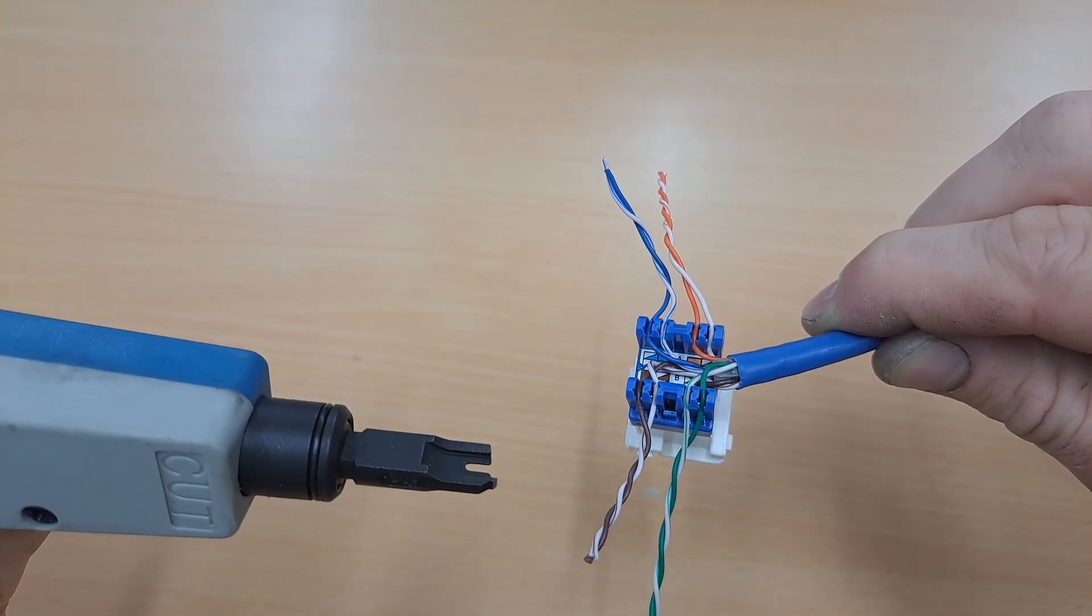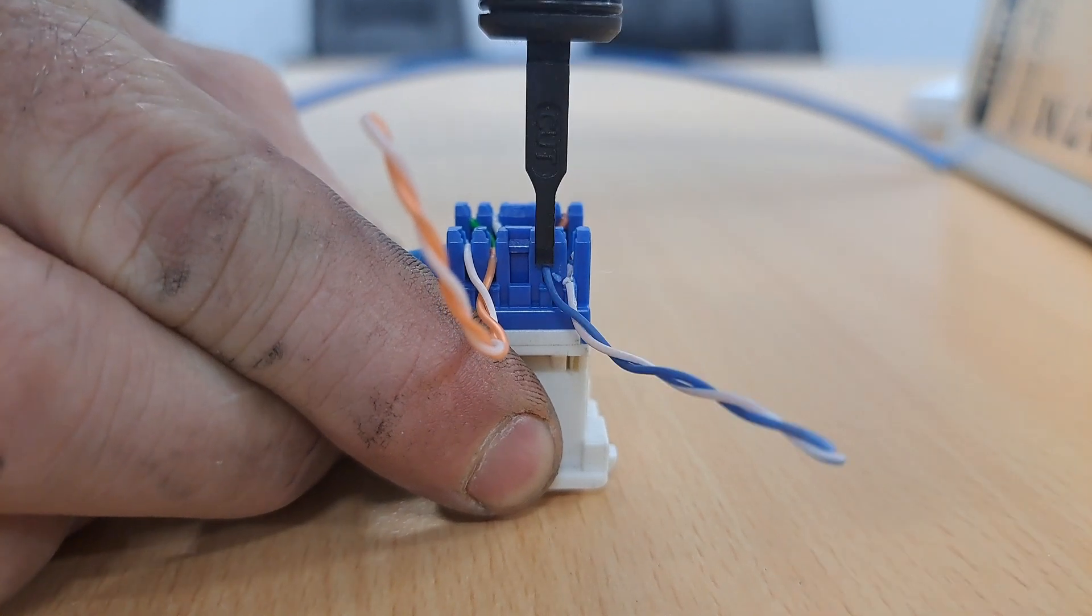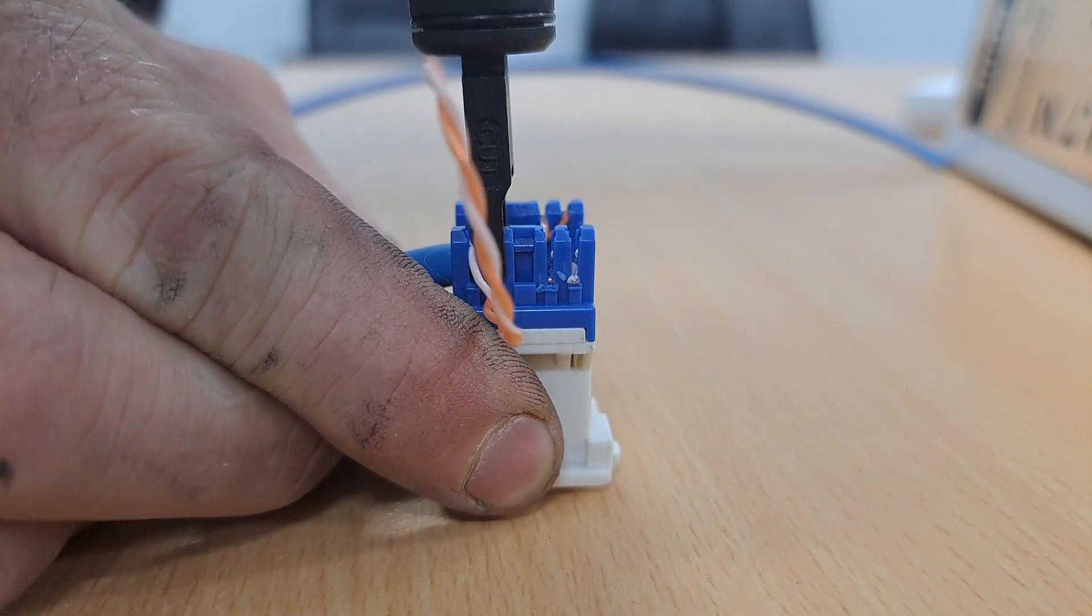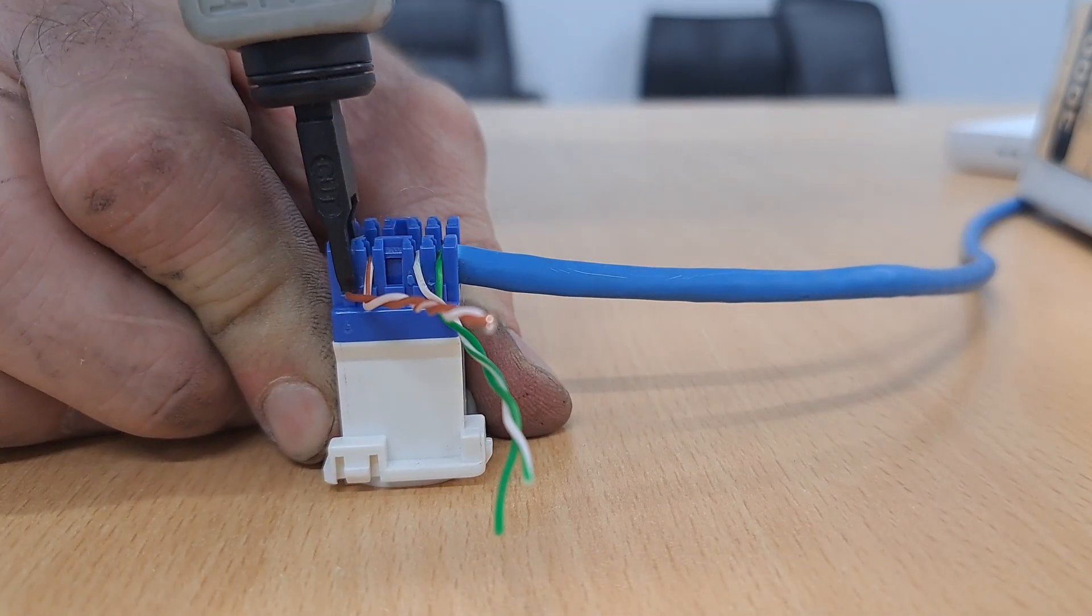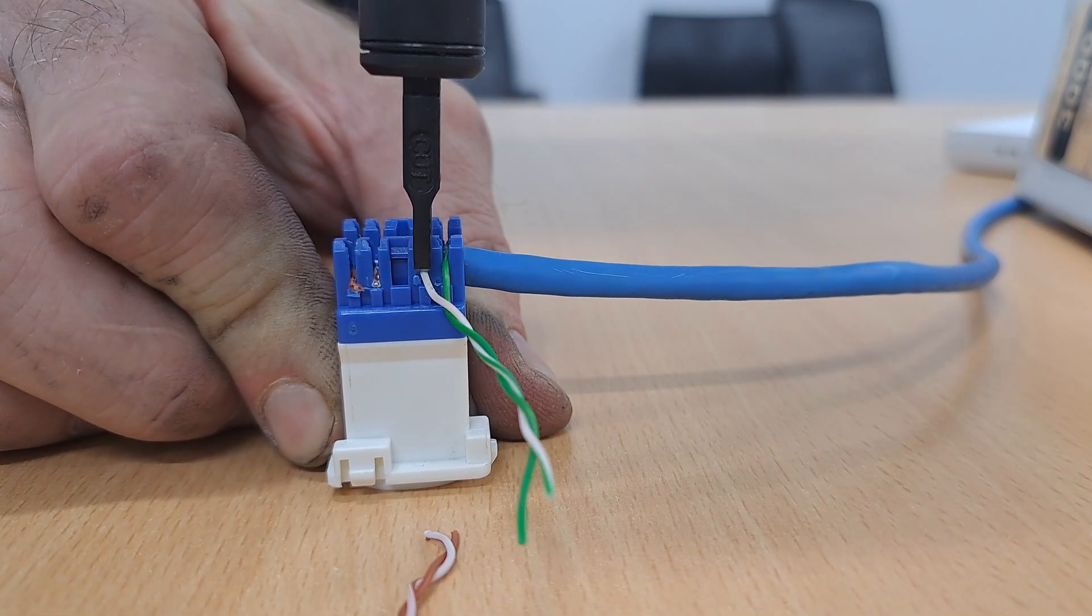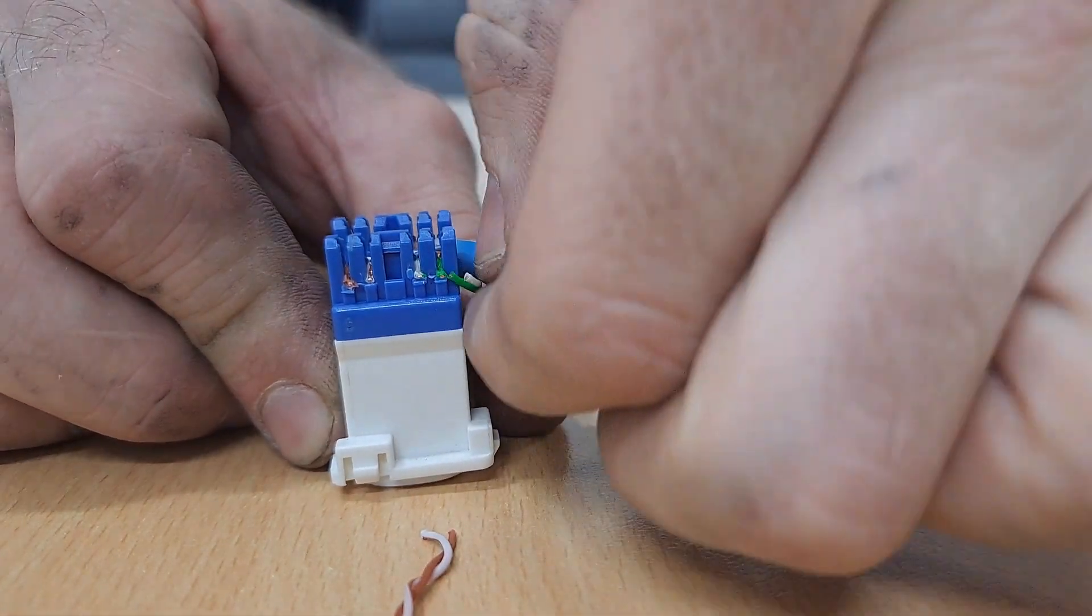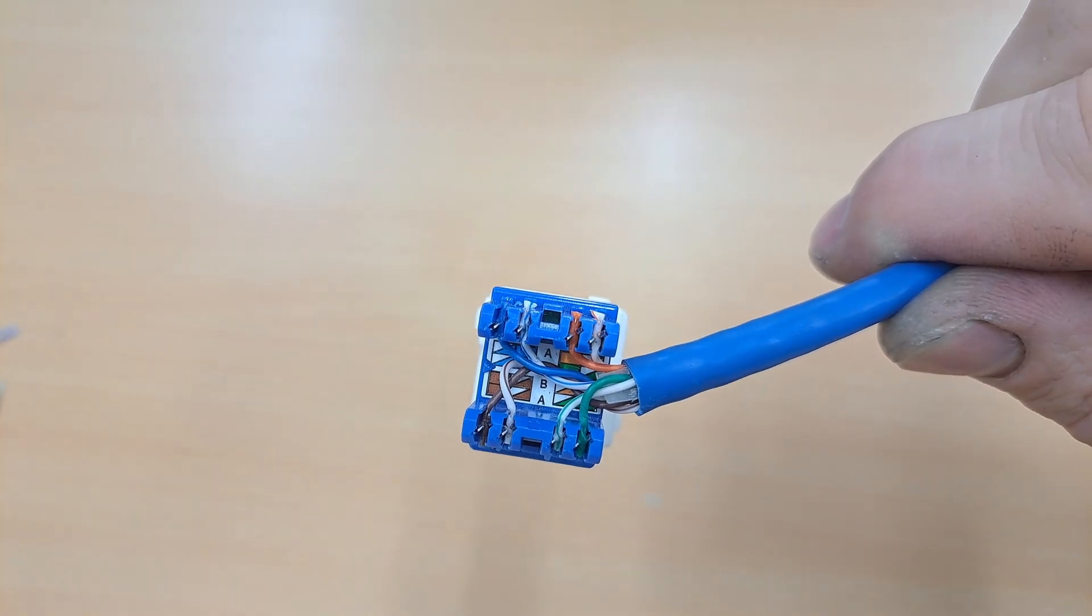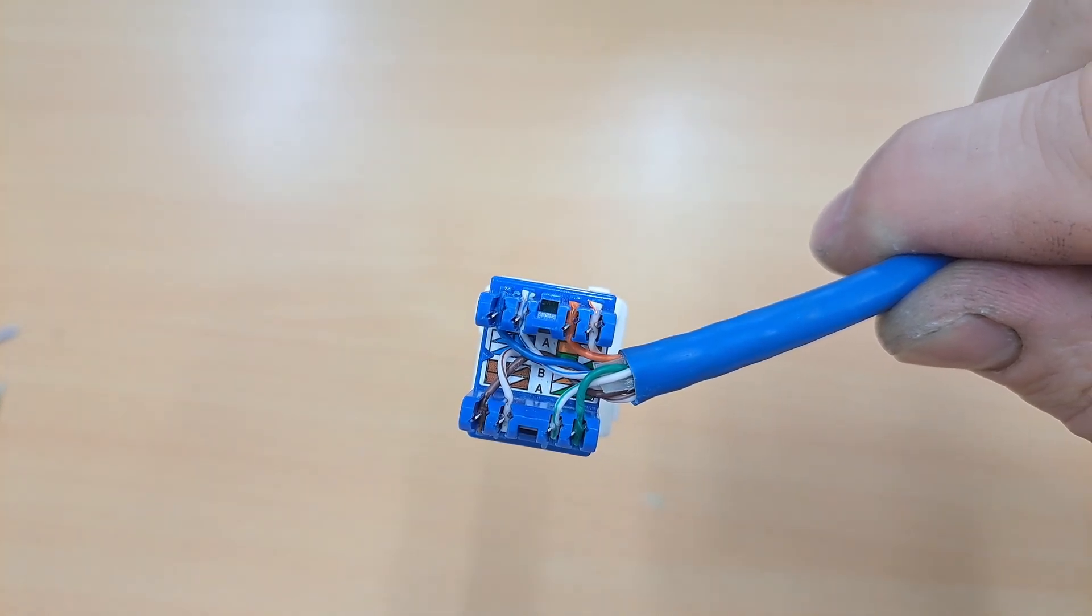Now we just simply punch down all eight cores. Ensure all the cores are seated correctly. If they are not, punch down again until they are.